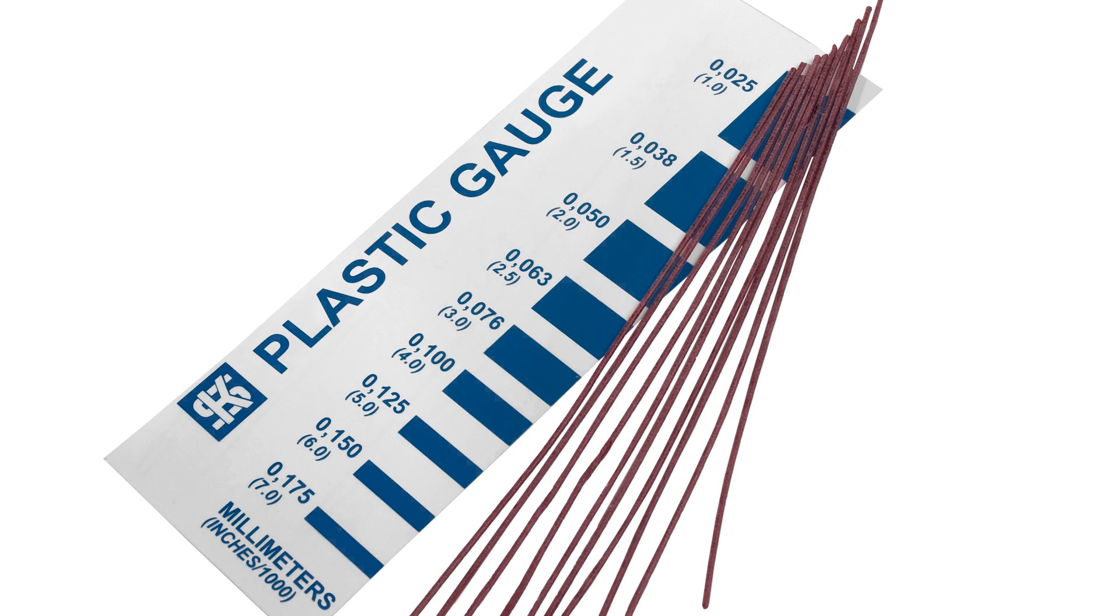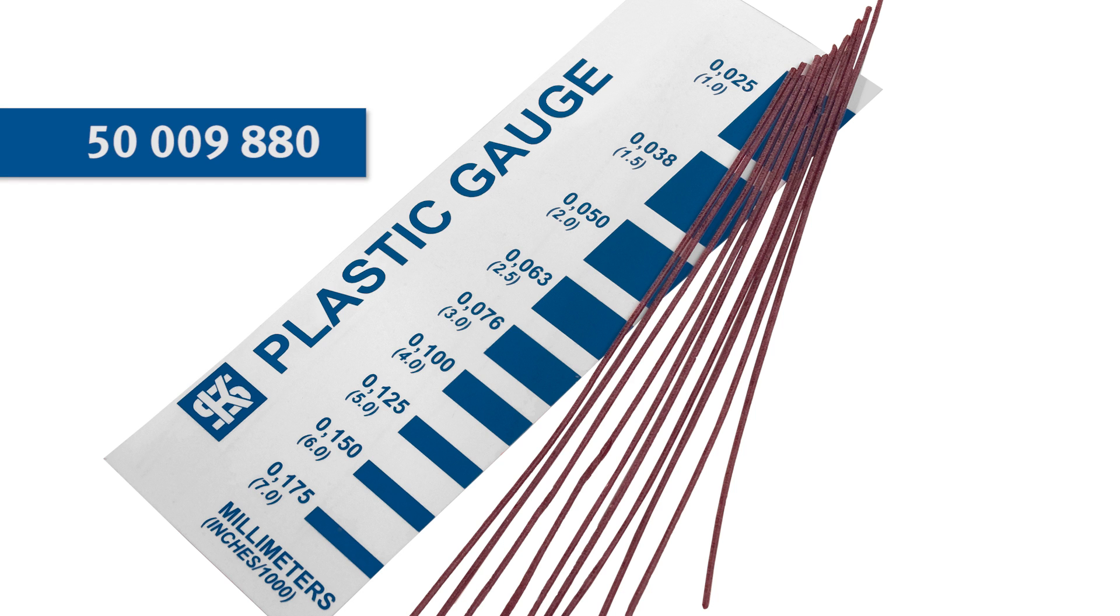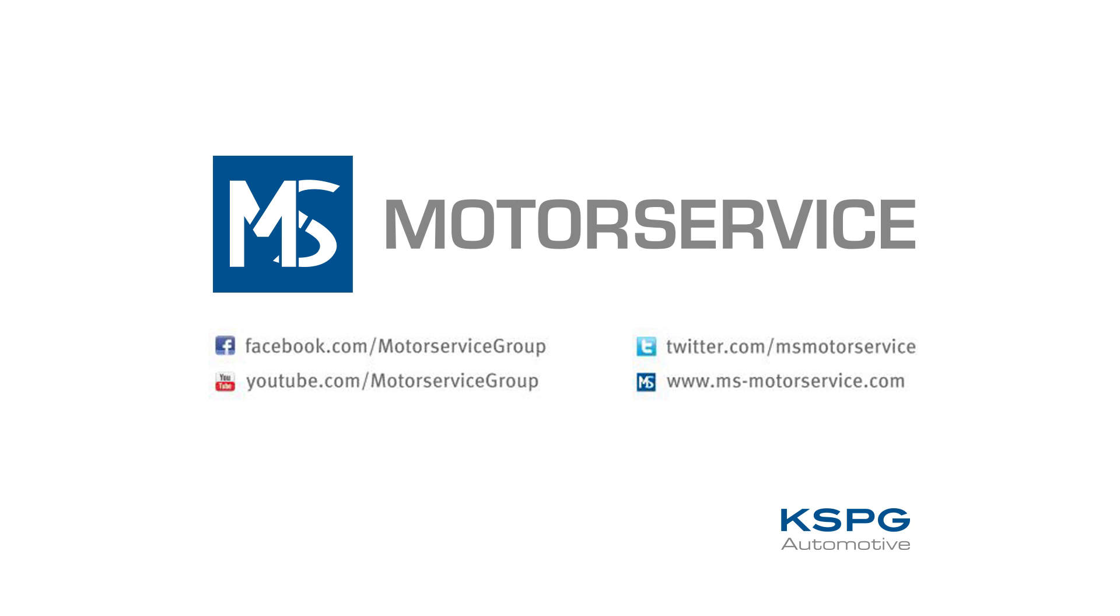Plastic gauge measuring strips are available from your local Kolbenschmitt dealer under item number 50-009-880. Further information and tips on this and other technical topics can be found on our homepage, www.ms-motorservice.com.